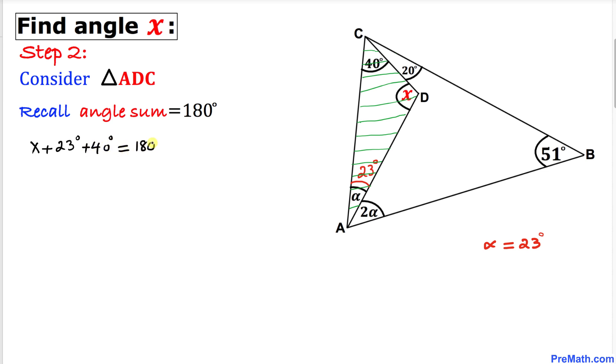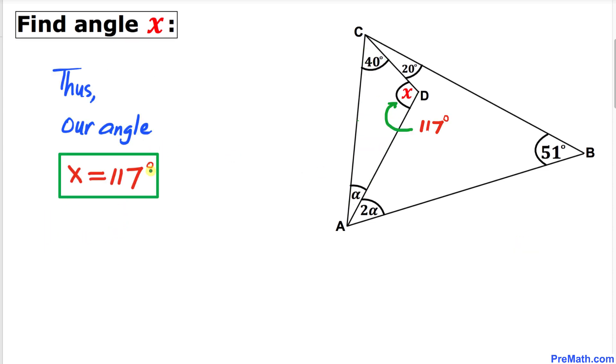Let's simplify: X plus 63 degrees equals 180 degrees. Let's subtract 63 degrees from both sides, so X turns out to be equal to 117 degrees. So our angle X turns out to be 117 degrees, and that's our final answer.